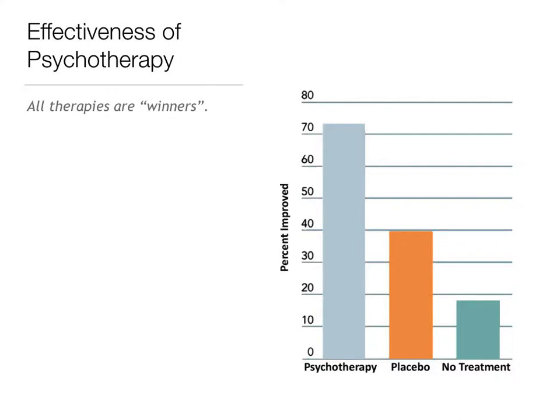In terms of the effectiveness of psychotherapy, we'll talk about four different kinds today, though there are others. What's important to remember is that all therapies are winners — everybody can benefit from therapy. These are evidence-based practices, meaning there has been rigorous research into these various techniques, and this research impacts the training of therapists going through graduate programs.